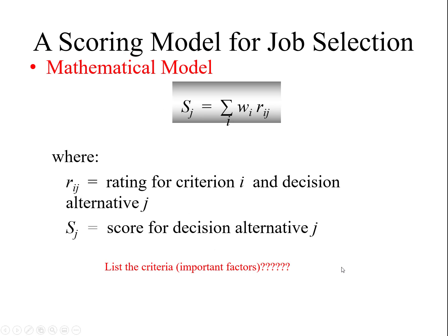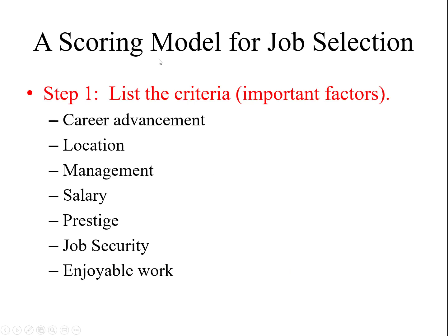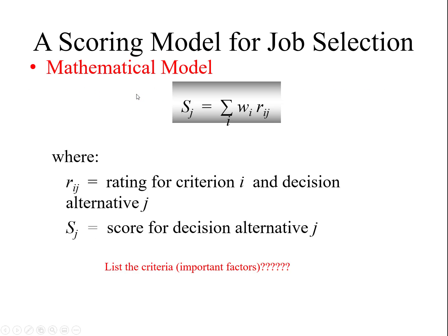The mathematical model is: Sj = Σ Wi × Rij, where Wi is the weight assigned to criterion i, Rij is the rating for criterion i and decision alternative j, and Sj is the score of decision alternative j.